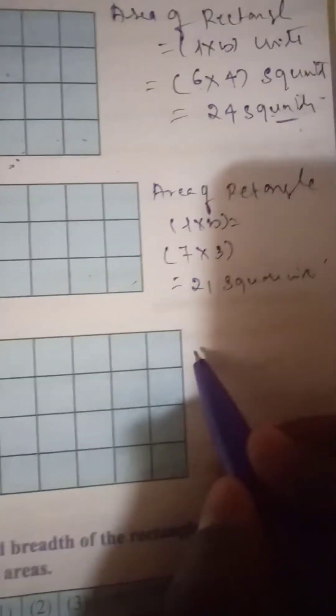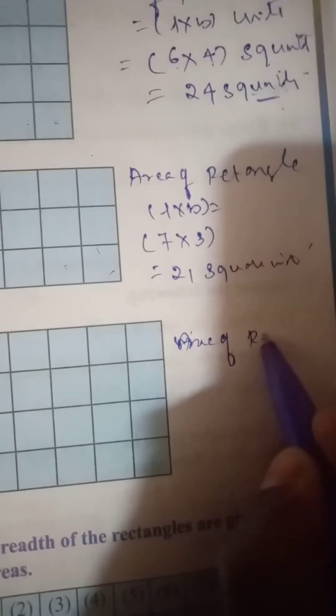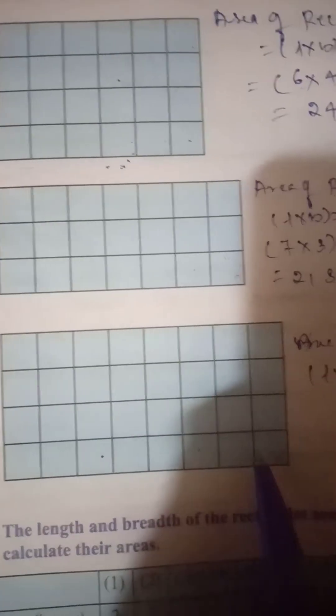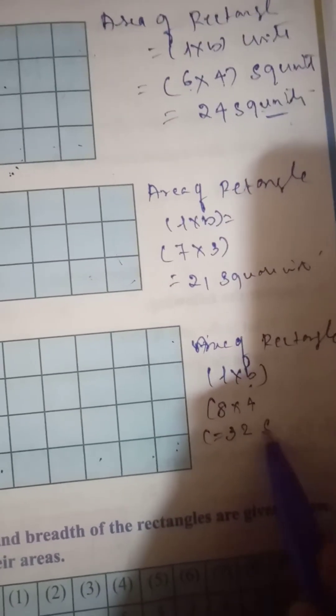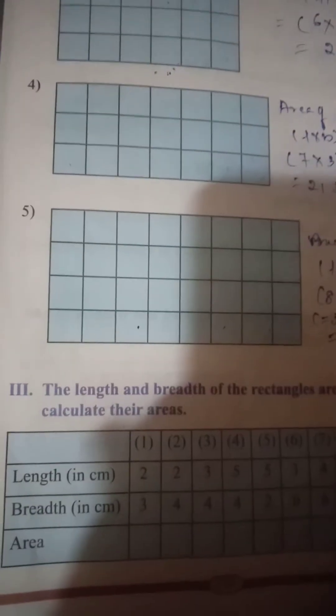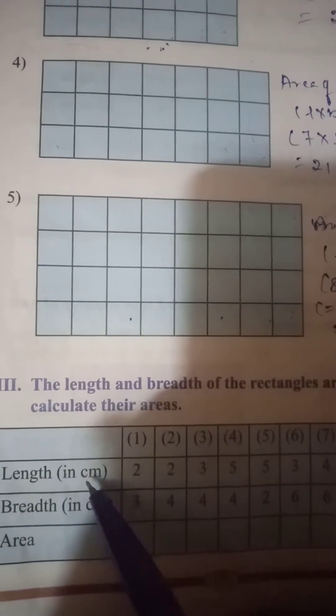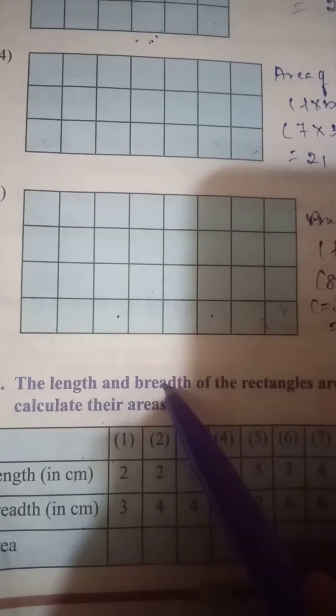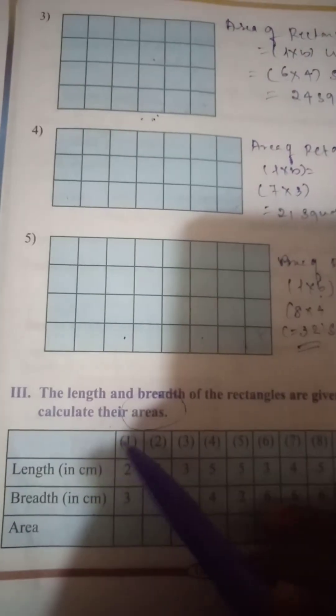Next: area of rectangle, length into breadth. Length is 8 and breadth is 4, so 8 fours are 32 — area is 32 square units. Next section: the length and breadth of rectangles are given in centimeters. Find the area in square centimeters for each question.